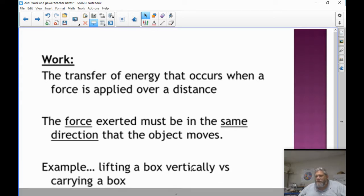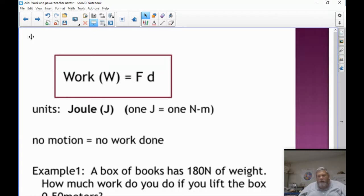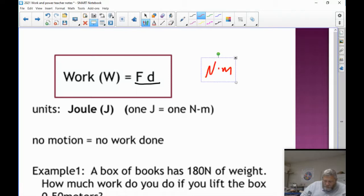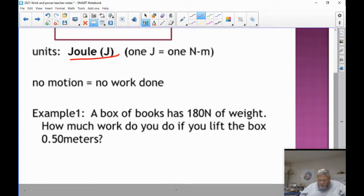So an example, lifting a box vertically as opposed to carrying a box. When you lift the box vertically, you're lifting upwards and the box is moving upward, so you're doing work. So our equation for work is force times distance. Very simple, very straightforward. It's the product of the force times distance. Our unit would be a Newton meter, which we call a joule. And you all should remember using joules in chemistry last year. No motion, no work done.